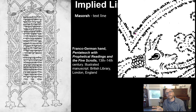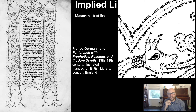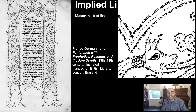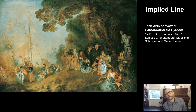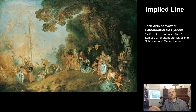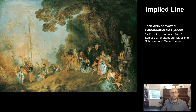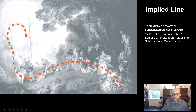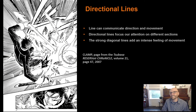Think of the Masora as footnotes for the text — helping the rabbi understand the deeper meaning — but instead of appearing at the bottom of the page, it creates a really cool design. Moving on, here's another example of implied line: a painting by the French Rococo artist Jean-Antoine Watteau. In his Embarkation for Cythera, we see a row of people forming a line. Most of these people aren't touching — it's not an actual line. It's an implied line.